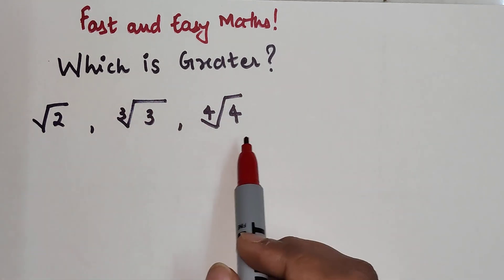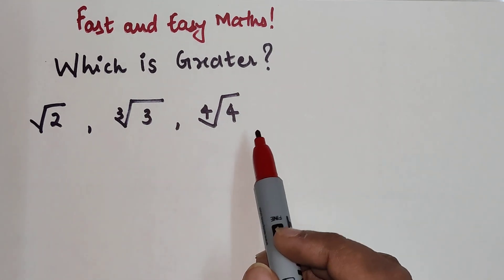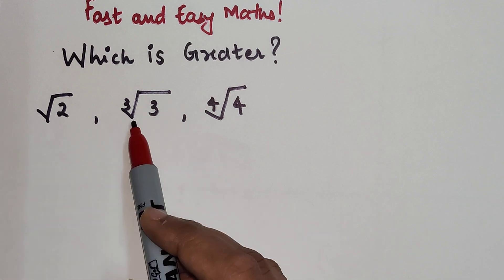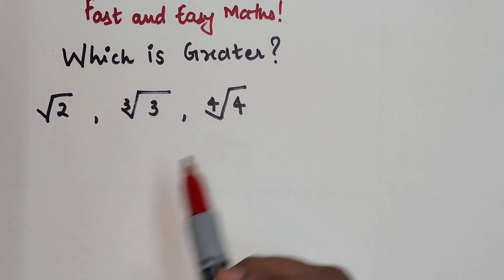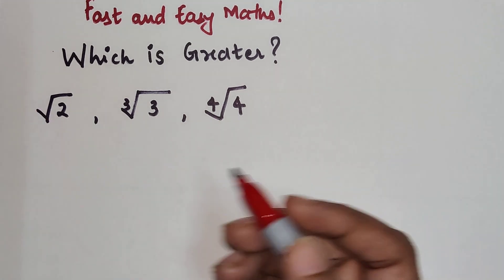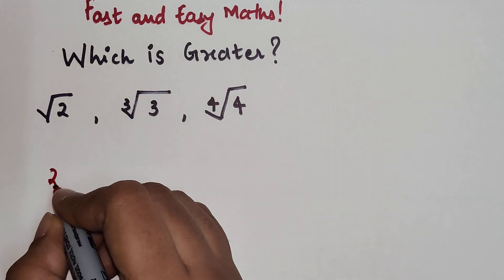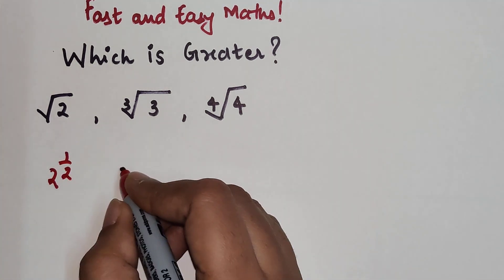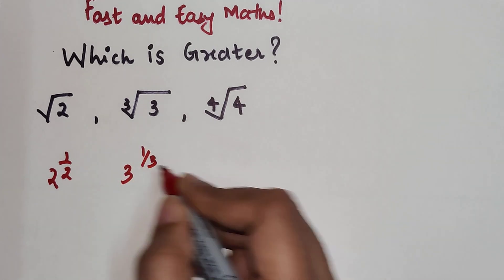Here we have root 2, then we have cube root of 3, and then we have fourth root of 4. In order to make it easier, let's write this in terms of indices. This is 2 raised to 1/2, this is 3 raised to 1/3, and this is 4 raised to 1/4.